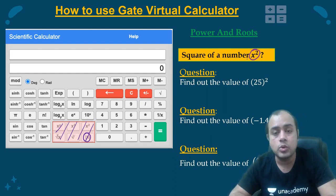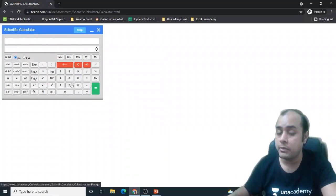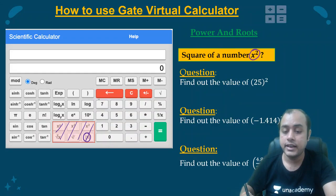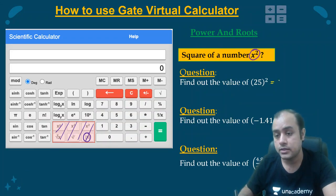So the first thing that I will be calculating is the square of 25. I will be using my mouse as you will be using in the GATE exam. 25, I will press square, so it is giving 625. Very simple. We are warming up slowly.